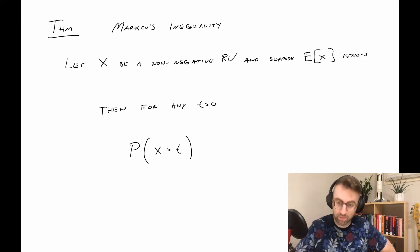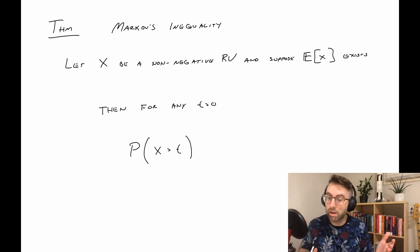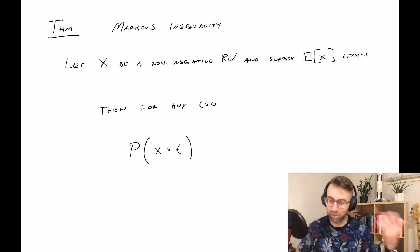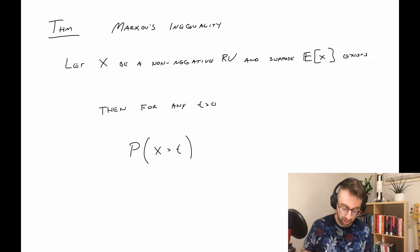The first inequality is called Markov's inequality. We have to consider some random variable X which is non-negative, meaning it can only take values zero or larger, and we're also going to assume that the mean exists. So for any positive t, the probability that X is greater than t is bounded above by the expected value of X divided by t.